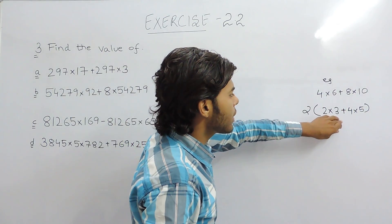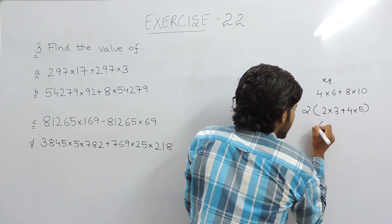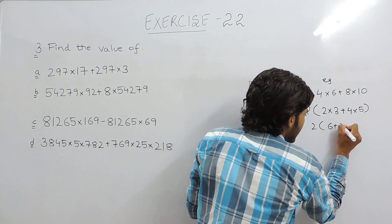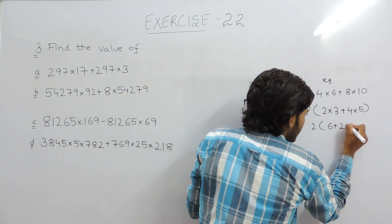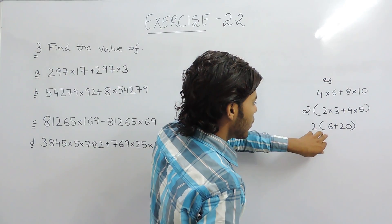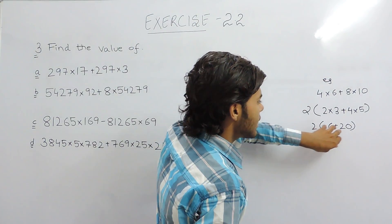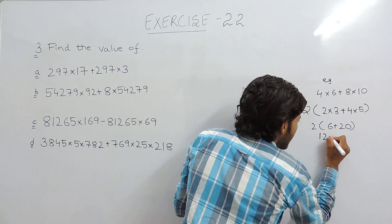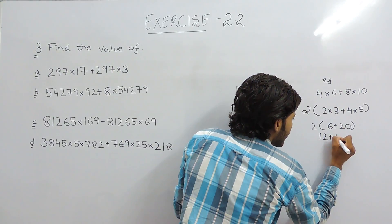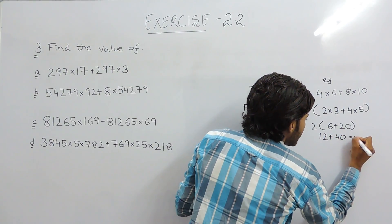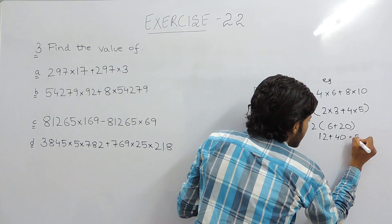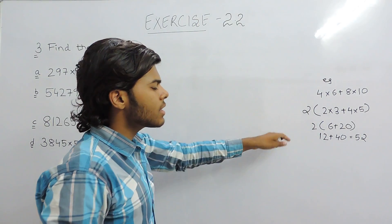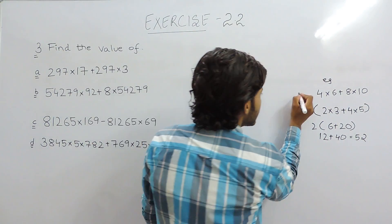Now the calculation becomes easy: 3×6 plus 4×5 equals 18 plus 20, so inside the bracket we get 2×(12 + 40) which gives 52. That is the required answer. This is the first way of taking common.